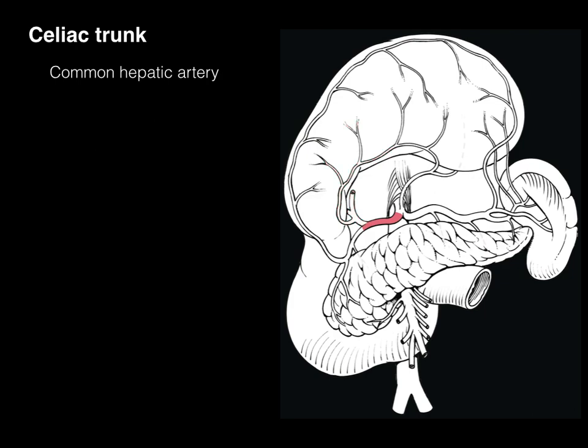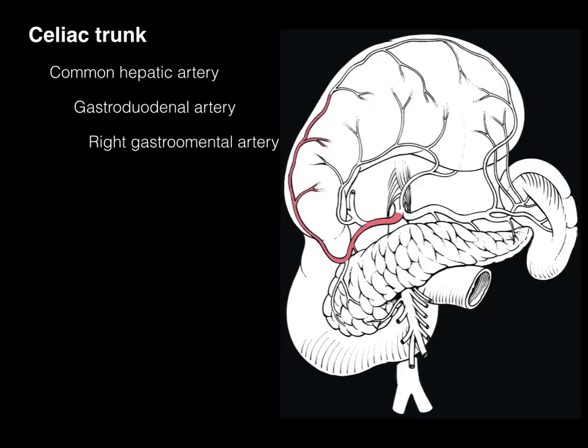The other branch from the common hepatic is the gastroduodenal artery — 'gastro' for stomach and 'duodenal' for duodenum. The gastric portion gives rise to the right gastroomental artery, which courses along the greater curvature of the stomach within the greater omentum and forms an anastomotic connection with the left gastroomental artery coming off the splenic artery.